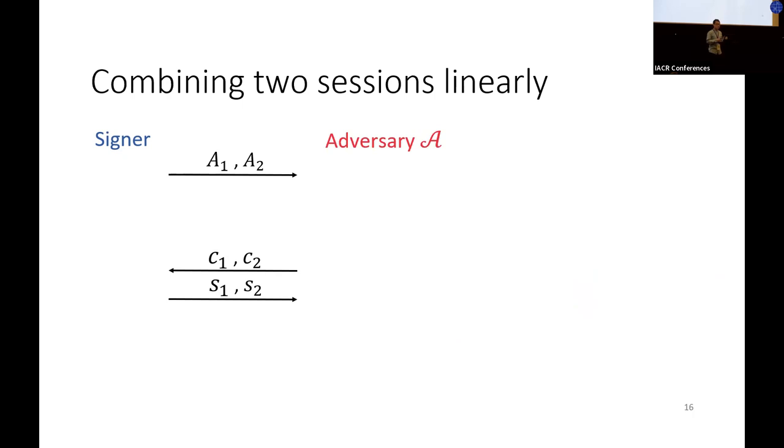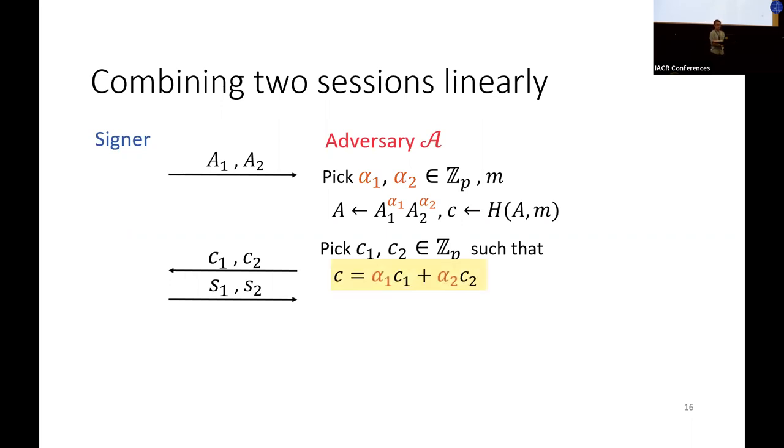Then we'll show how we can extend it to an attack where the adversary can output three distinct and valid message-signature pairs. And then we'll see where the ROS problem appears. So first of all, to combine two sessions, the adversary can pick two arbitrary coefficients alpha_1, alpha_2, together with the message m. The adversary sets A to be A_1 to the alpha_1 times A_2 to the alpha_2, and c to be the hash of A and the message.